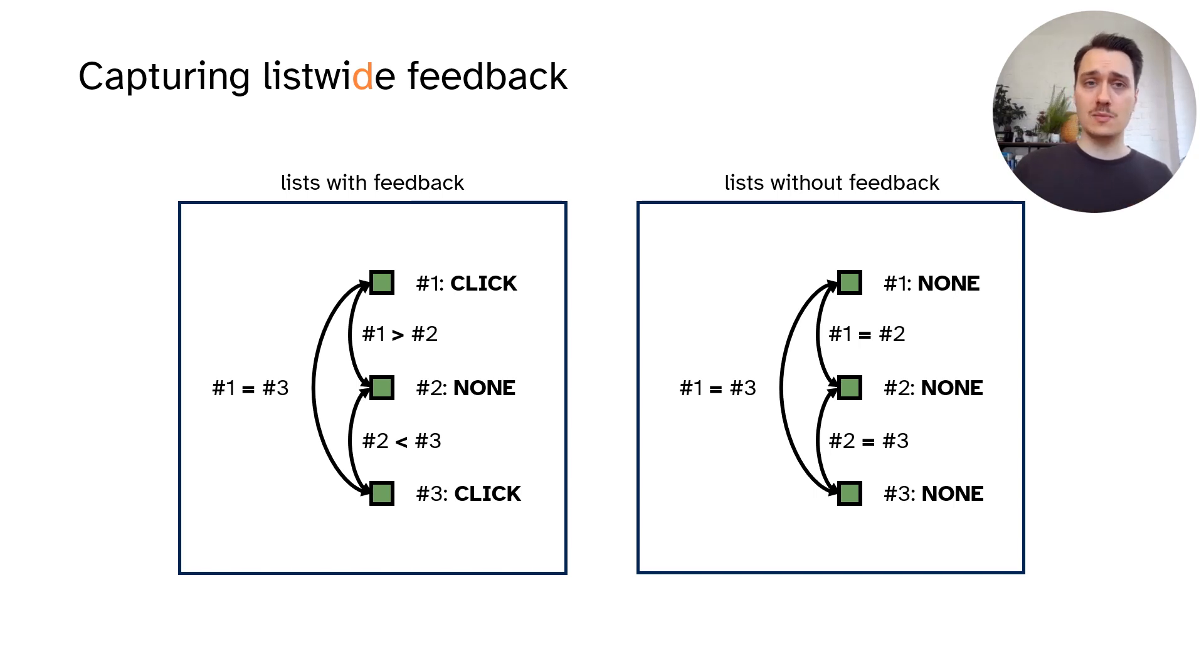If all items receive the same label, which is the case for the list on the right, then there are no relative differences and the loss is either zero or uninformative.